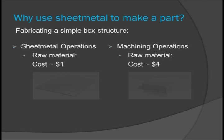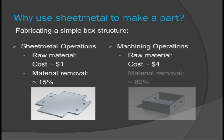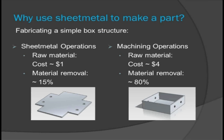Once the material is purchased, we need to look at how much of the material needs to be removed during the fabrication process. To make the part from sheet metal, we need to cut out four corners and punch four holes. Making the part from billet requires machining away the entire center section and then drilling the four holes.